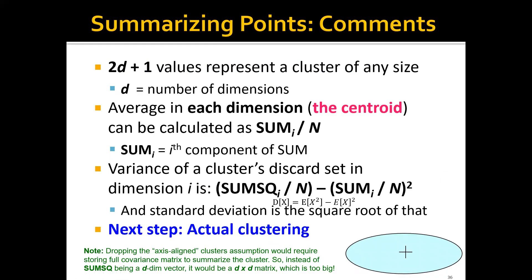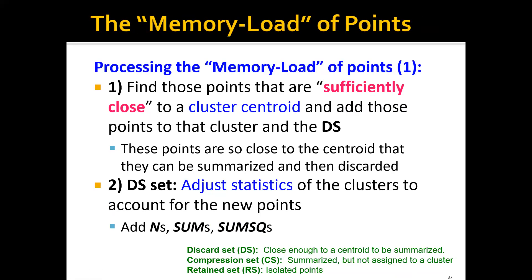Now that we have all the summarization, the next step will be how to do the actual clustering. We will have five steps. In the first step, to process one memory load of points, we'll first find those points that are sufficiently close to a cluster centroid, and add those points to that cluster and the DS. These points are so close to the centroids that they can be summarized and then discarded. The second step will be to adjust the statistics of the clusters to account for those new points. This is like recalculating the means in the k-means algorithm. We'll just add the n, add the sums, and add the sum sqs for all the points.